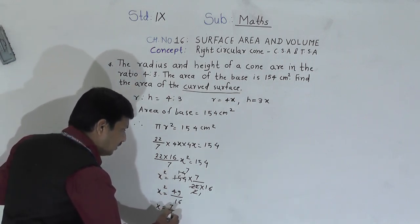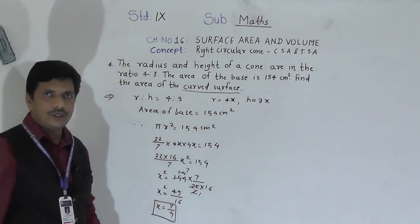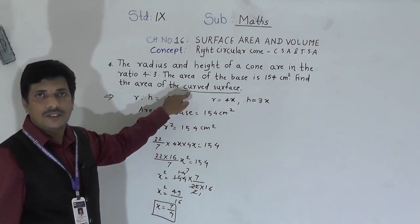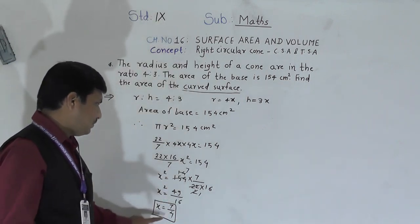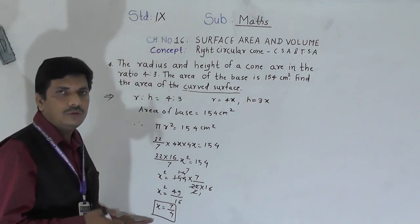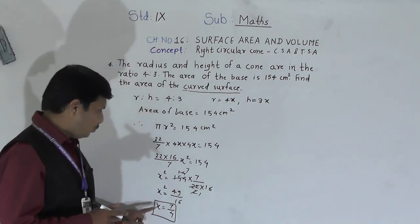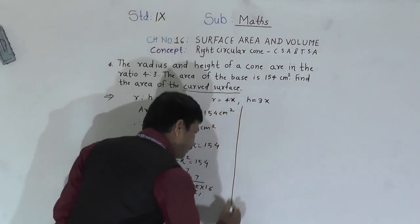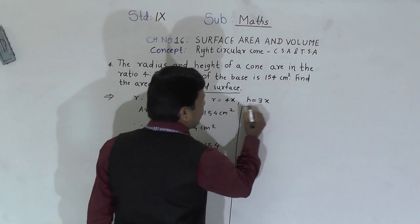The value of x is 7/4. Now we need to find the curved surface area using the formula πrl, so we must know the actual radius r and slant height l. With x known, we can find both.